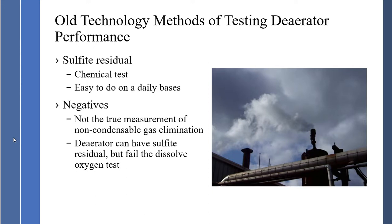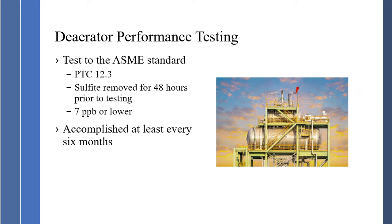Another method is sulfite residual — chemical tests that are easy to do on a daily basis and should be done on a daily basis. The negative is that it is not a true measurement of non-condensable gas elimination; it just tells me I have sulfite residual. A deaerator can have sulfite residual but fail the dissolved oxygen test. I have seen deaerators that have sulfite residual and when we do the ASME test, they test out at 300 parts per billion. Therefore, we must do the ASME test, which is ASME standard PTC 12.3. You have to remove the sulfite for 48 hours prior to testing because we want to measure true deaerator performance, which is 7 parts per billion or lower. This should be accomplished every 6 months — some plants do it monthly, but at least do it every 6 months.